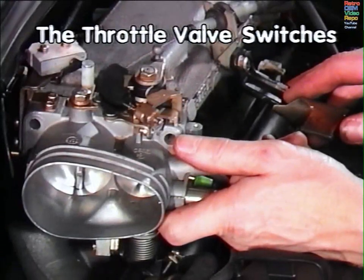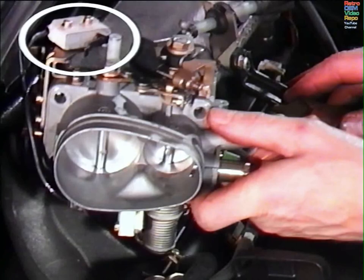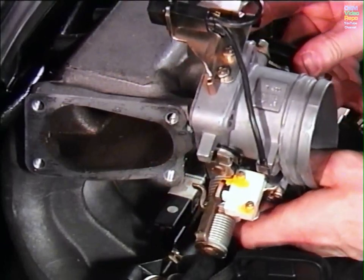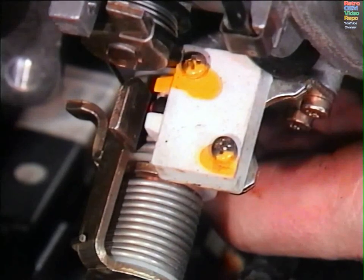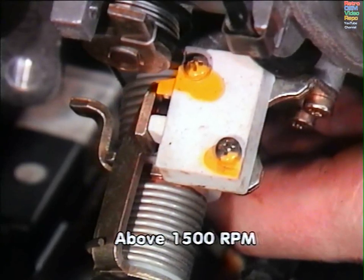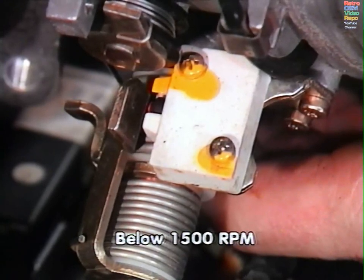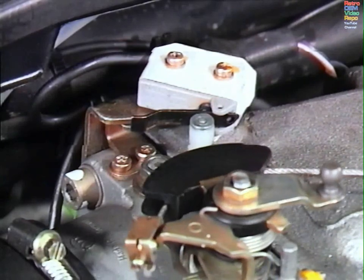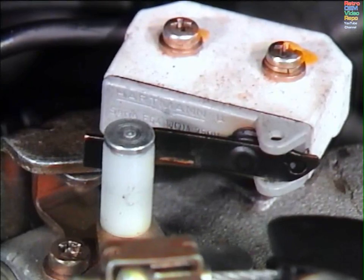The throttle valve switches. There are two switches on the throttle valve housing, and between them they perform three functions. Firstly, the idle switch tells the control unit when the throttle valve is closed, which in turn brings in the idle stabilization system during tick over. Secondly, with the engine running at working temperature and above 1500 revolutions per minute with the throttle closed, overrun cut off occurs. So no more fuel is injected until the throttle is opened again, or the engine speed drops below 1500 revolutions per minute. Finally, the full load switch provides the signal for full load enrichment. This happens at full throttle. When this switch closes, it signals the control box to supply extra fuel to the injectors.